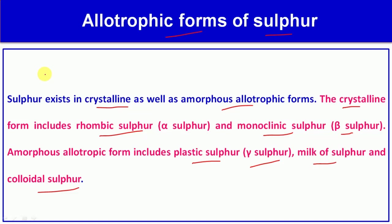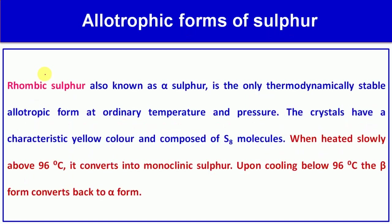Rhombic sulfur is known as alpha sulfur. It is the only thermodynamically stable allotrophic form at ordinary temperature and pressure. The crystals have a characteristic yellow color and are composed of S8 molecules.